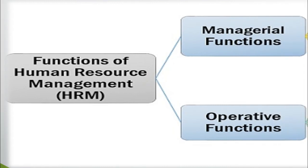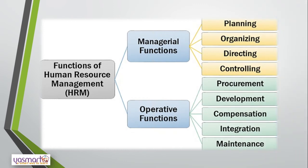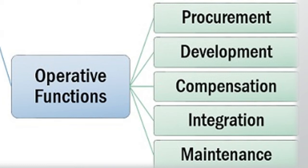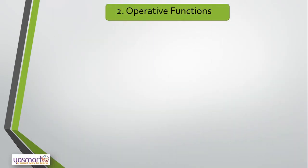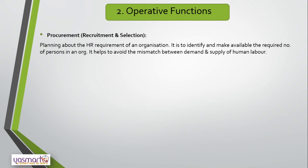The second function of HRM is operative functions. HRM is a process which involves managerial functions such as planning, organizing, directing, coordinating, and controlling, and we have to use all these properly toward the operative functions of HRM. The important operative functions include acquisition, which means recruitment and selection of employees, also known as procurement. It involves searching and identifying the required human resource, attracting and stimulating candidates to apply for jobs. Selection is the process of choosing the right number and type of employees from a pool of candidates. Procurement of human resource is the most important function carried out by HRM.